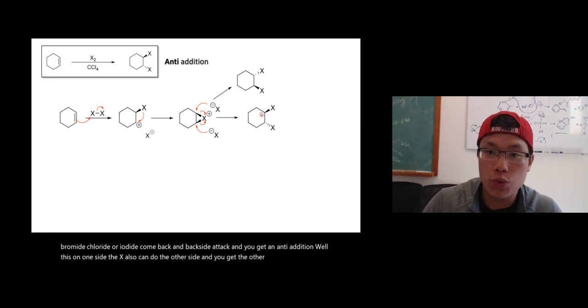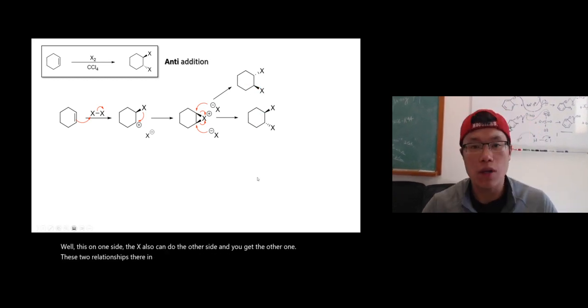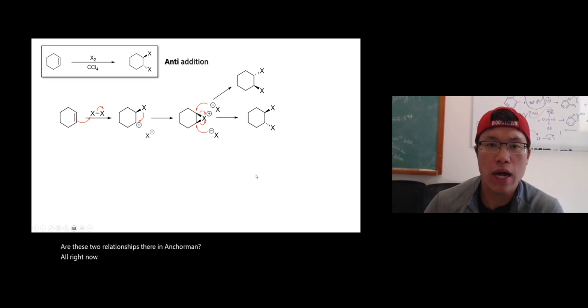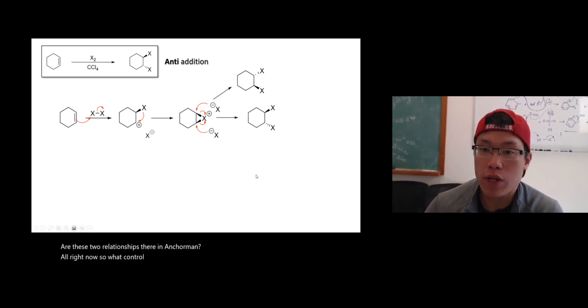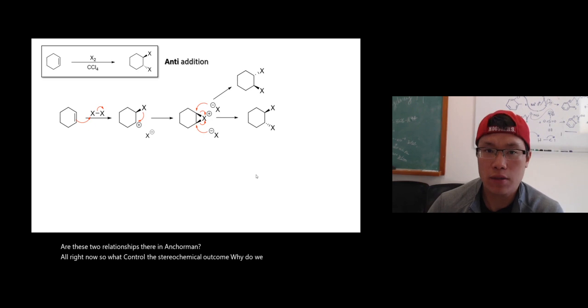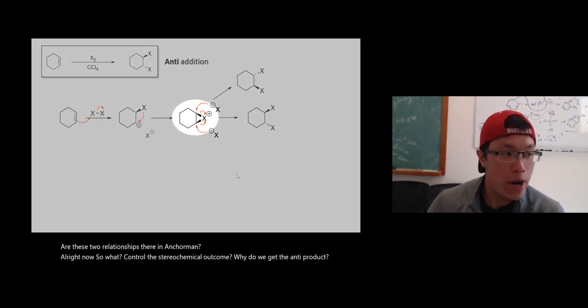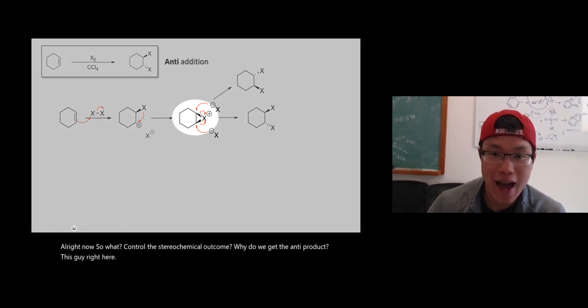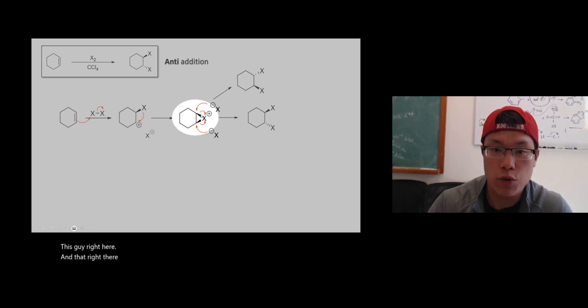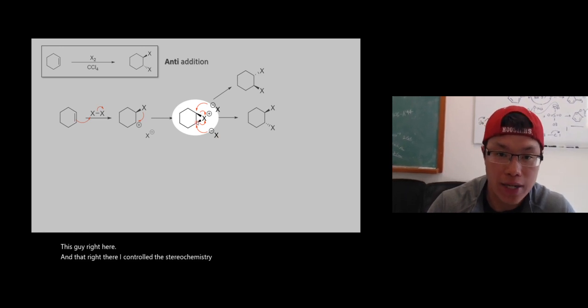These two relationships, they are enantiomers. Okay, alright. Now, so what controls the stereochemical outcome? Why do we get the anti-product? Well, this guy right here, that right there controls the stereochemistry. X had to attack from the other side.